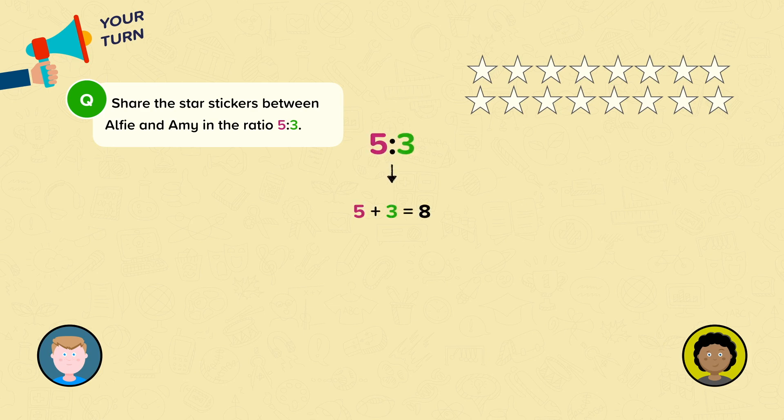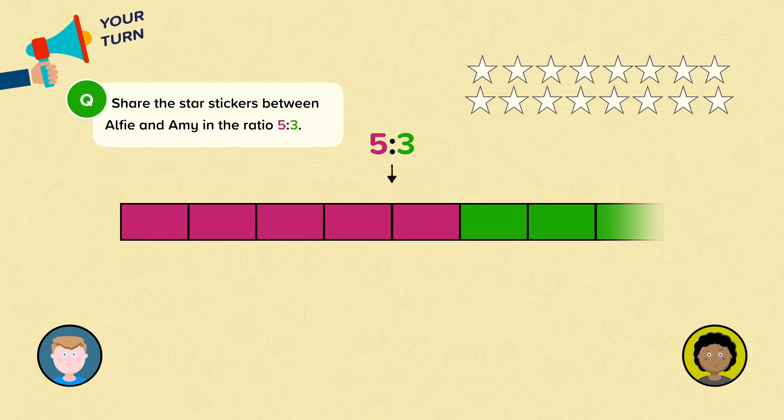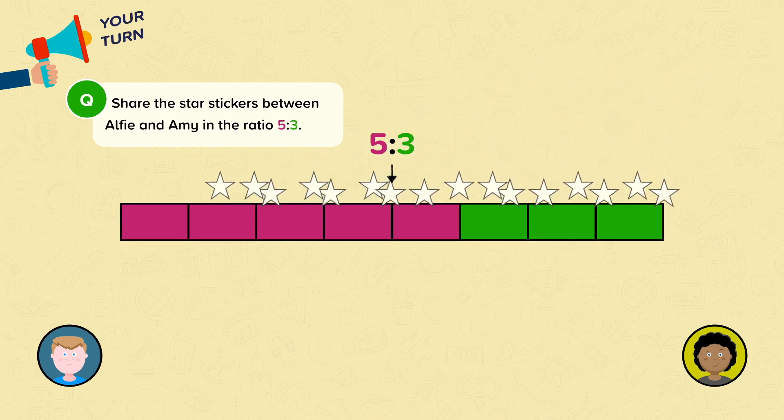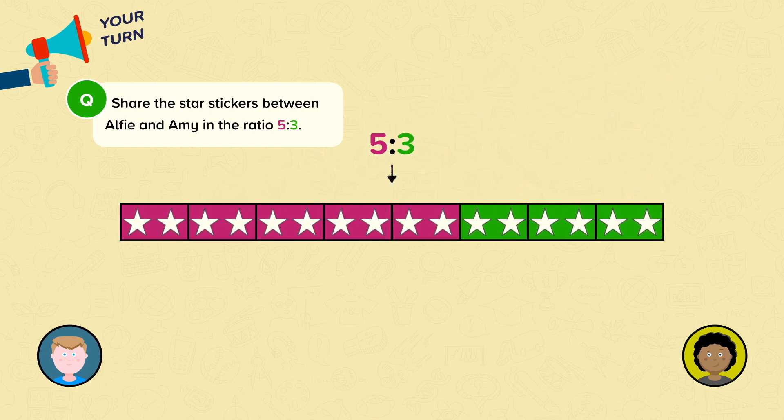First, find the total number of parts. For the ratio 5 to 3, you add 5 plus 3 equals 8. Draw a bar diagram to help. Share the stars equally into the 8 parts. Each part has two stars.